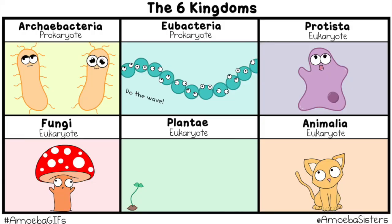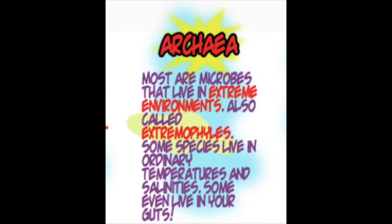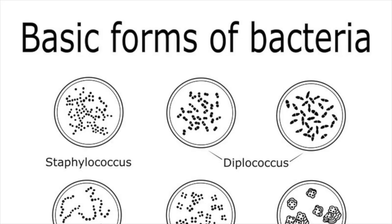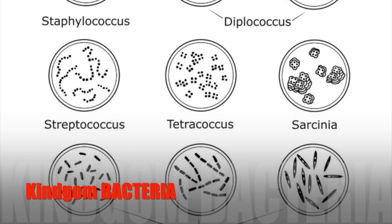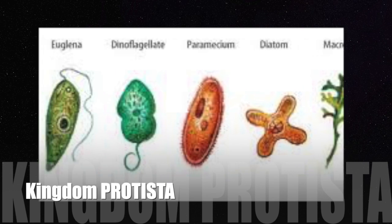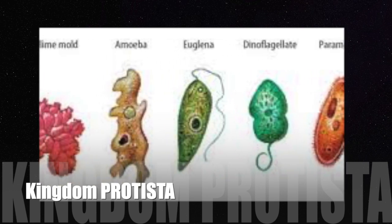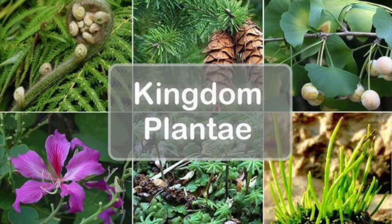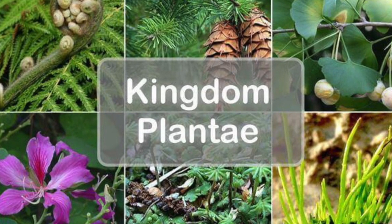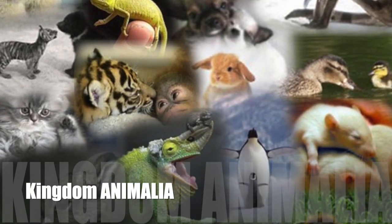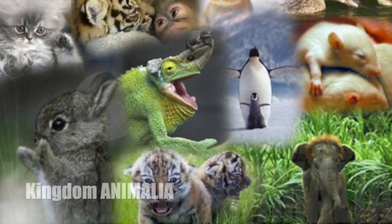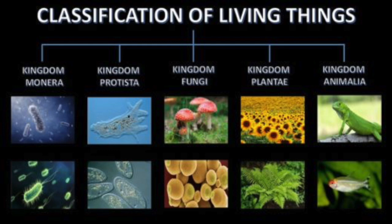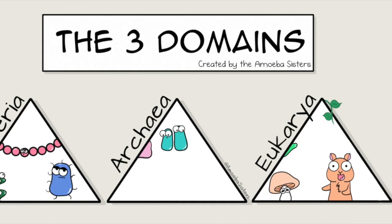There are six recognized kingdoms in the classification of living things. The first is kingdom archaea, the second is kingdom bacteria, the third is kingdom protesta, the fourth is fungi, the fifth is plantae, and the sixth is animalia. All living things fit into one of these six kingdoms and one of these three domains.